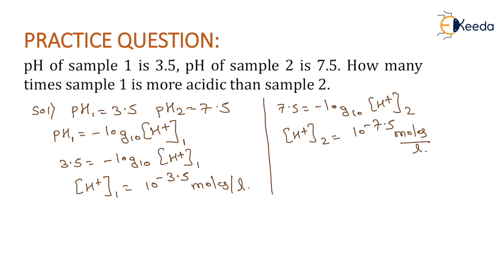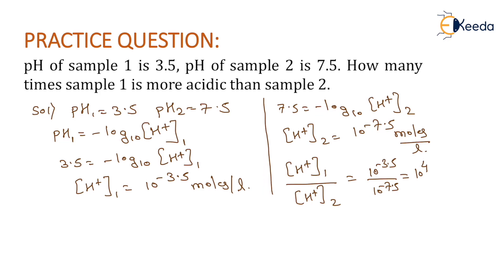The question asks how many times sample 1 is more acidic than sample 2, so we find the ratio of [H⁺]₁ to [H⁺]₂. This equals 10⁻³·⁵ divided by 10⁻⁷·⁵, which gives 10 to the power of 4. Therefore, sample 1 is 10⁴ times more acidic than sample 2. This is the final answer.